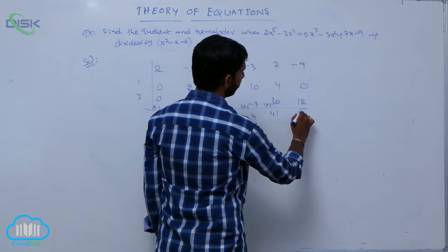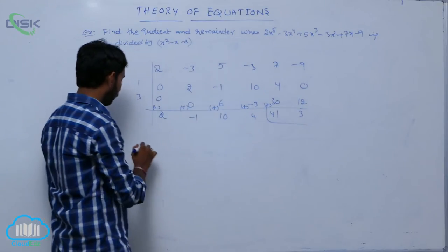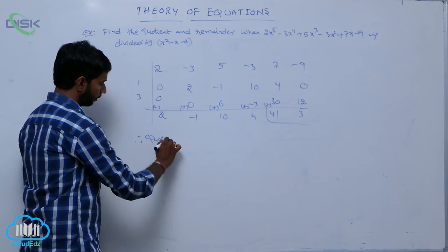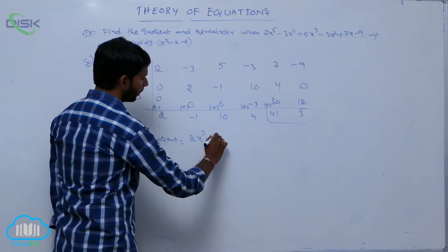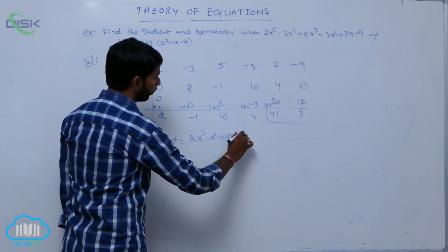The total is 3. Here the coefficient is equal to 2x cube minus x square plus 10x plus 4.